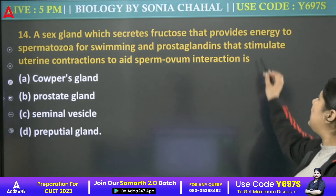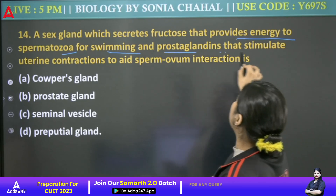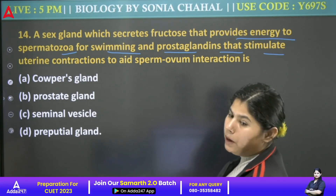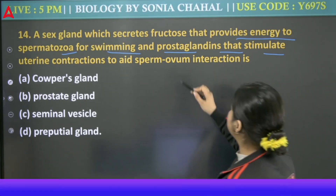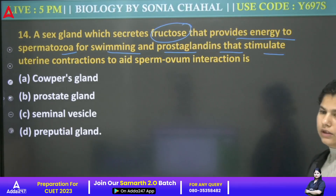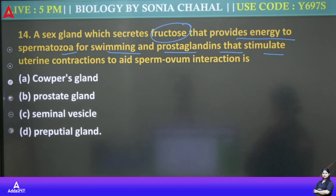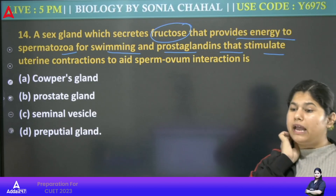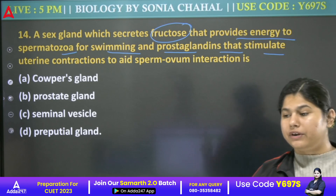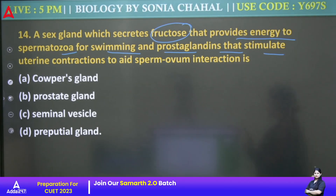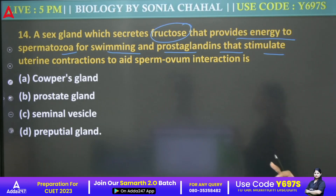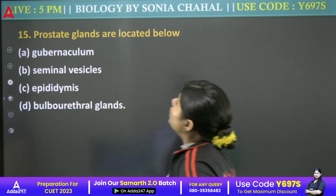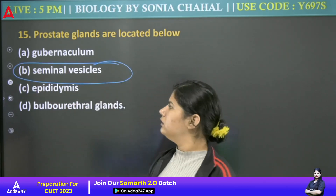Next: A sex gland that secretes fructose to provide energy to spermatozoa for swimming, and a prostate-like gland that stimulates uterine contraction to aid sperm-ovum interaction is — Cowper's gland, prostate gland, seminal vesicle, or preputial gland? The gland that secretes fructose — that is seminal vesicle. Seminal vesicle comes first, then prostate, then bulbourethral gland. The prostate gland is located below the seminal vesicle. Answer is seminal vesicle.